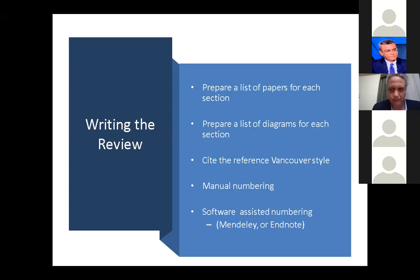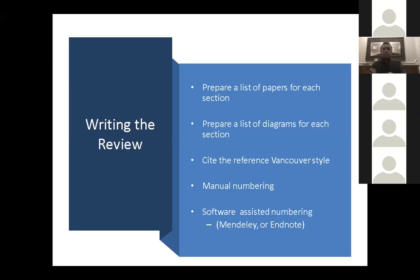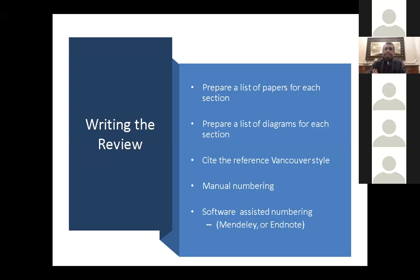Prepare a list of diagrams for each section. Cite references in Vancouver style, and use manual numbering or — better — software-assisted numbering such as Mendeley or EndNote. When you write the literature, you put references in, and if you use software-assisted numbering, it will calculate and organize the references according to the text automatically.